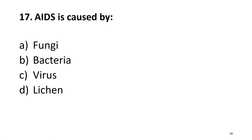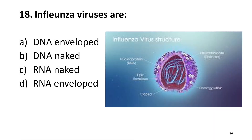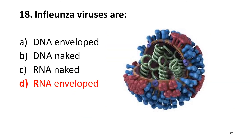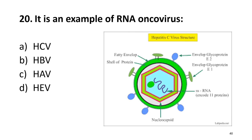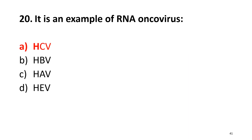AIDS is caused by a virus and the causative agent is HIV. Question 18: Influenza viruses are RNA viruses and they are also enveloped, derived from the host cell membrane. Question 19: All the following events of the HIV life cycle take place in the cytoplasm of the host cell except one. Question 20: This is an example of an RNA oncovirus — oncovirus means a virus which causes cancer. The right answer is alpha.